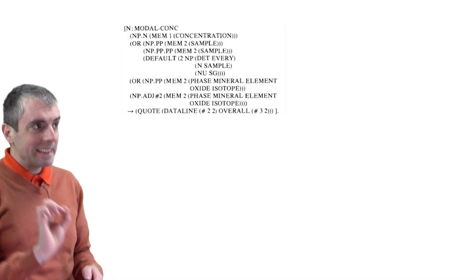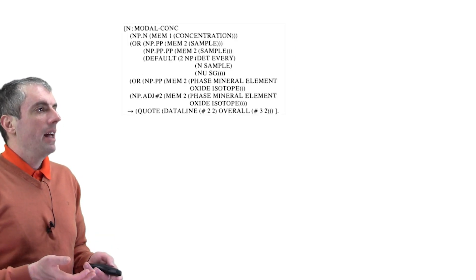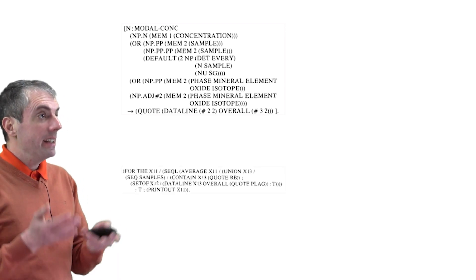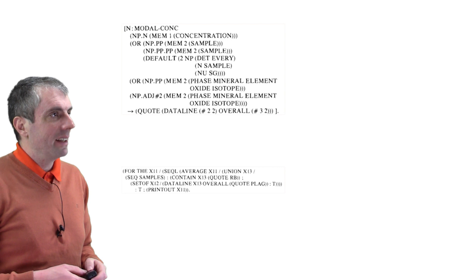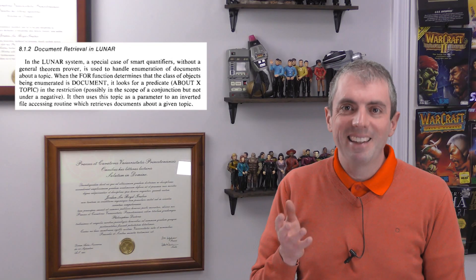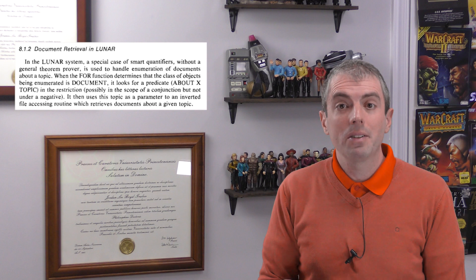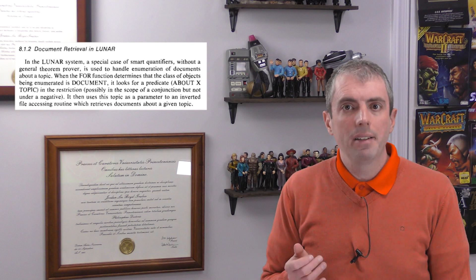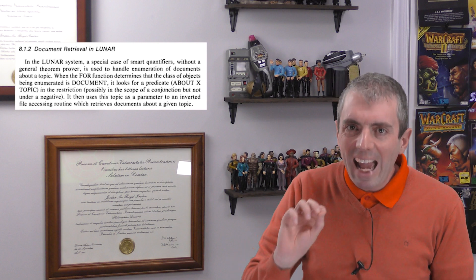After that syntactic analysis, it then gets turned into a logical form that can be executed against its database. It's probably not worth going into this — our databases don't look like this anymore. One thing I found interesting in rereading this with the perspective of the 21st century is that LUNAR also has something that looks like an IR component, although it's explicitly looking for documents tagged with a particular topic, unlike doing something like TF-IDF retrieval, which should bring to mind the Cranfield paradigm that we talked about before.